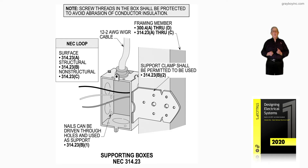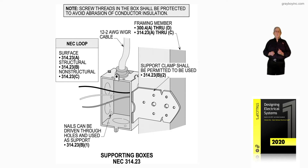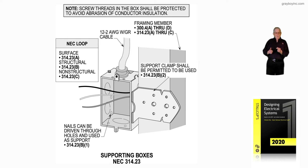Notice the note — it talks about screw threads in the box should be permitted to avoid abrasion of conductor insulation. This is where you might take a 16-penny nail and drive it through the back of the box. If that is the case, to support it to a wooden stud, it would sit back at the back of the box so that the insulation would not be damaged.